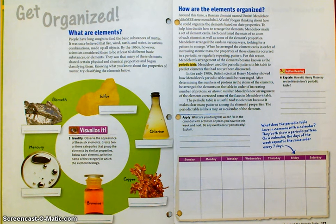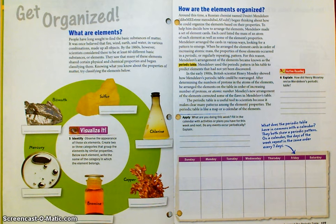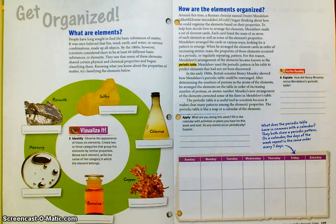On page 127: How are the elements organized? Around the 1860s, a Russian chemist named Dmitry Mendeleev began thinking about how he could organize the elements based on their properties. To help him decide how to arrange the elements, Mendeleev made a set of element cards. Each card listed the mass of the atom of an element as well as some of the other elements' properties. Mendeleev arranged the cards in various ways, looking for a pattern to emerge. When he arranged the element cards in order of increasing atomic mass, the properties of those elements occurred in a periodic or regularly repeating pattern. For this reason, Mendeleev's arrangement of the elements became known as the periodic table. He is the one credited with coming up with the first periodic table of the elements.